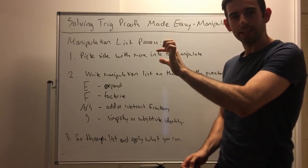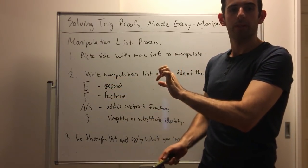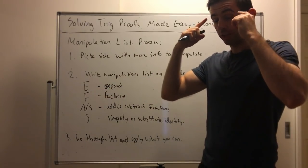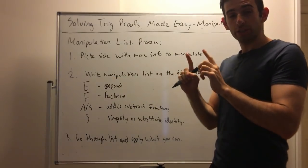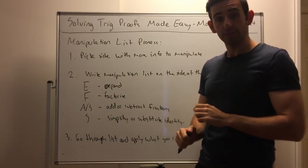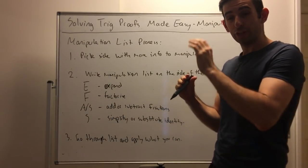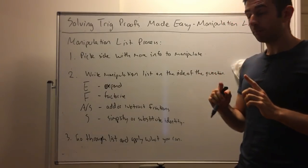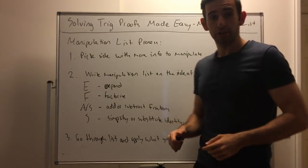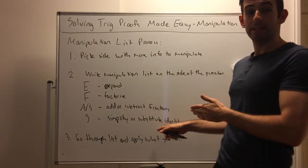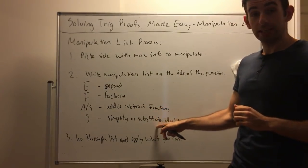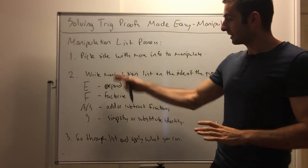When we go from one line to the next, we go through this list and pick what we can do. The key is to write this on the side of the question — instead of thinking in your head what you can do, you have it written down, so going from one step to the next you can always do at least one of these. The only problem is substituting identities: you have to know all your trig identities, so keep them in front of you when you're practicing.